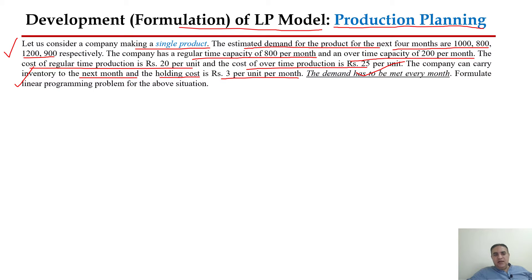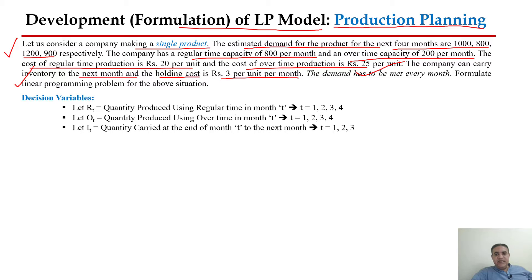In this particular problem we have a total of 12 decision variables. We have 12 decision variables because we have four time periods. We are interested to find out the regular time production quantity in month one, month two, month three, and month four — that is four decision variables. We also want to know how much quantity we will produce in overtime in month one, month two, month three, and month four — that is our overtime production quantity.